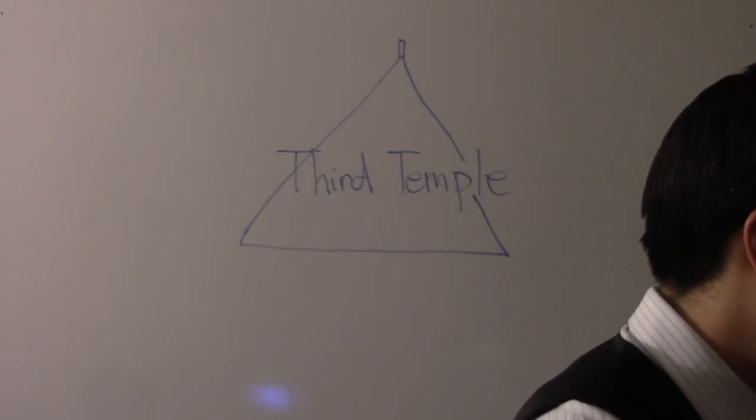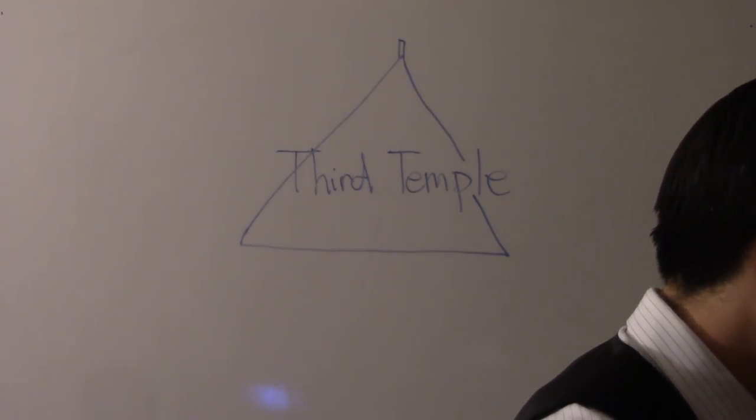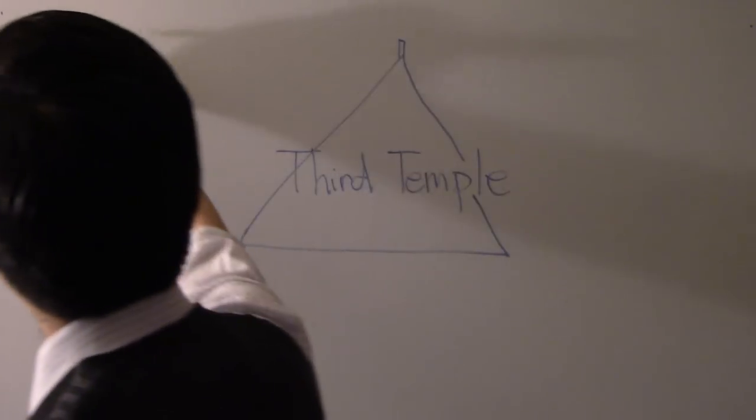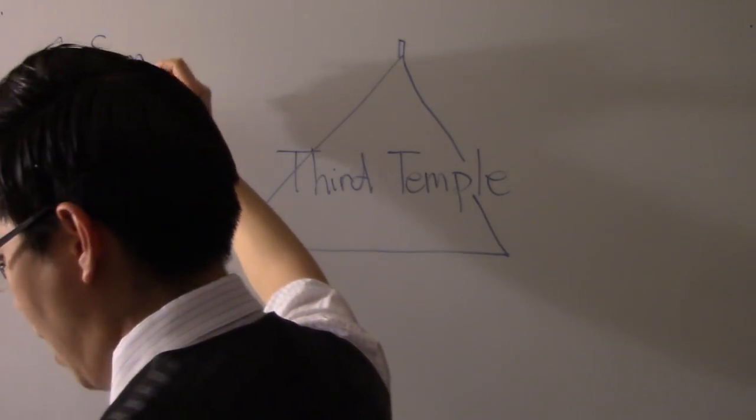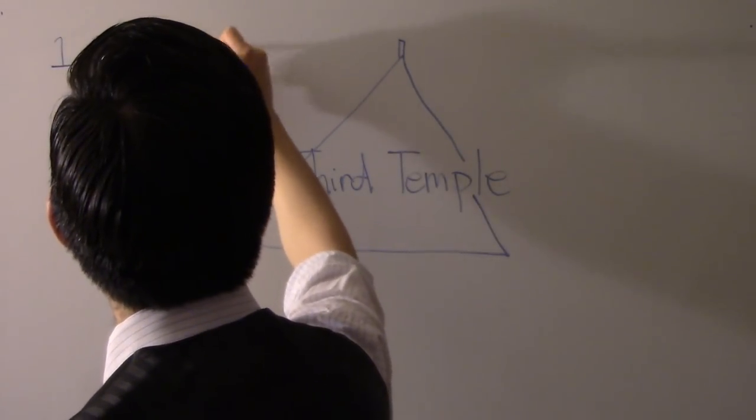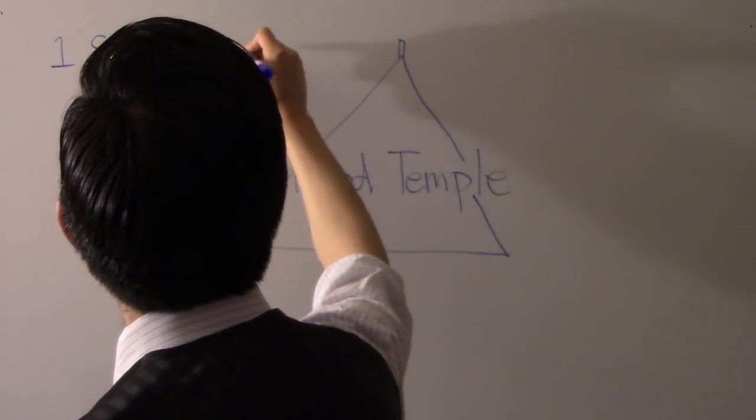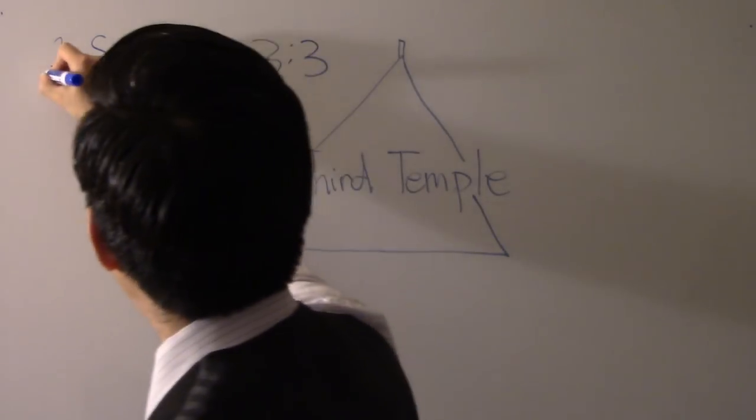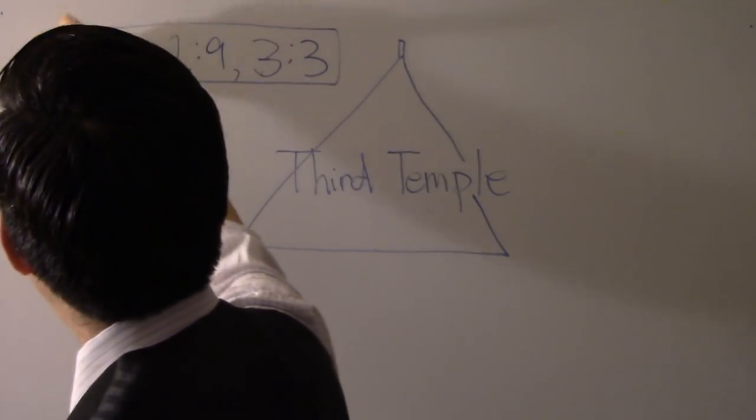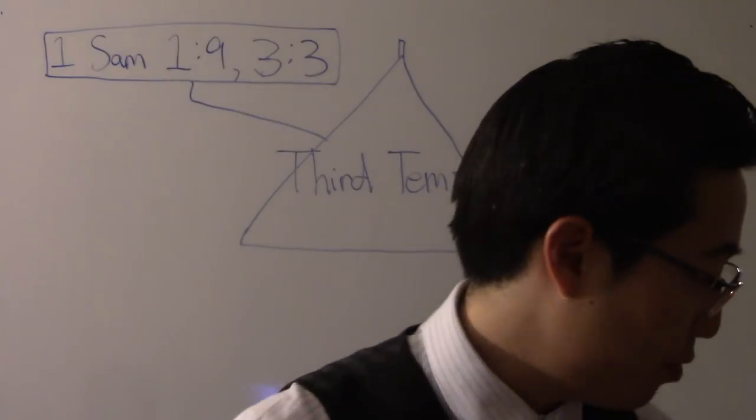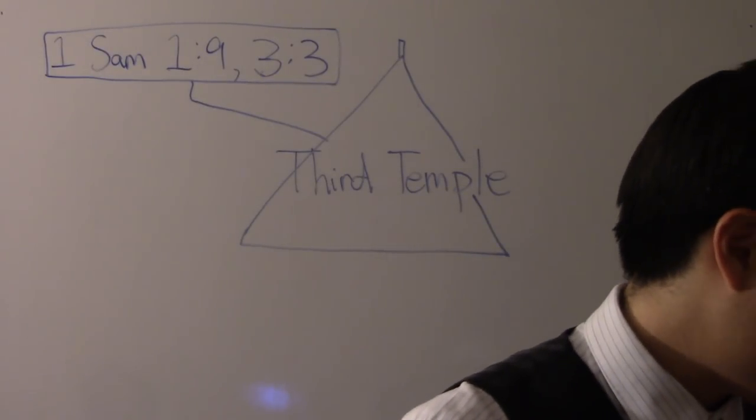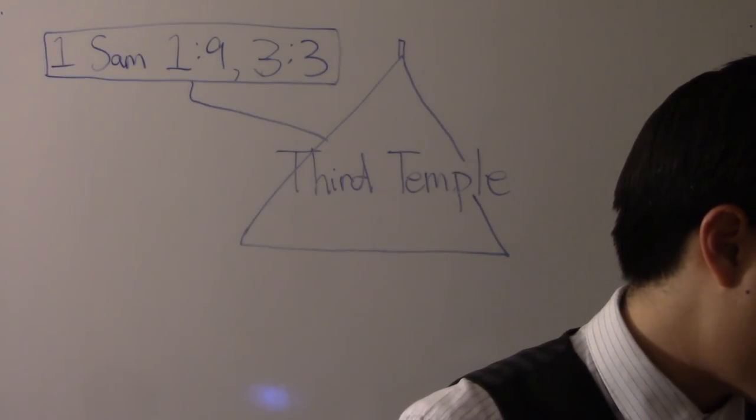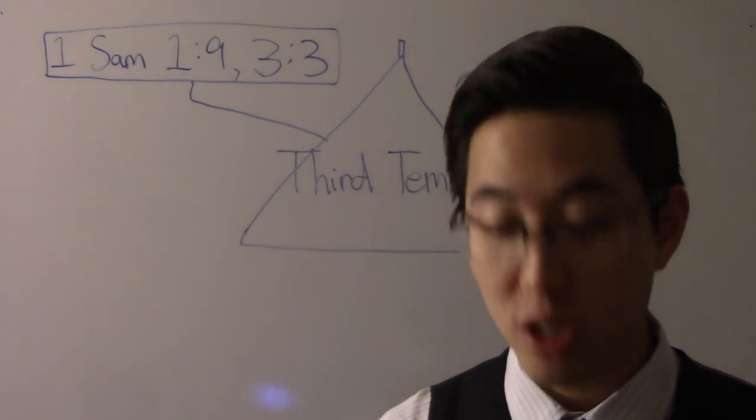Let's also look at chapter 3, chapter 3 and verse 3. So what we saw is 1 Samuel chapter 1 verse 9. We're going to see chapter 3 and verse 3. The Bible says, And ere the lamp of God went out in the temple of the Lord, where the ark of God was, and Samuel was laid down to sleep.